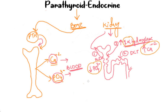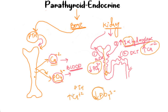So PTH has acted upon the bone and the kidney, and has increased calcium in the blood and decreased phosphate. You may ask why phosphate is decreased — yes, phosphate is being resorbed from the bone, but when it enters the blood and goes into the urine, the kidney cannot reabsorb the phosphate. So the net result is that phosphate is dumped into the urine, while calcium is reabsorbed by the kidney and therefore increased.